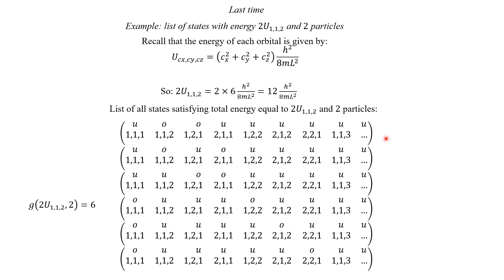Last time we defined a strategy to label states of the total system. Recall that the system we are interested in is the ideal electron gas, and we're labeling each state by placing the letter O on top of the orbitals that are occupied and the letter U on top of the orbitals that are unoccupied. The multiplicity for this energy and number of particles is six.